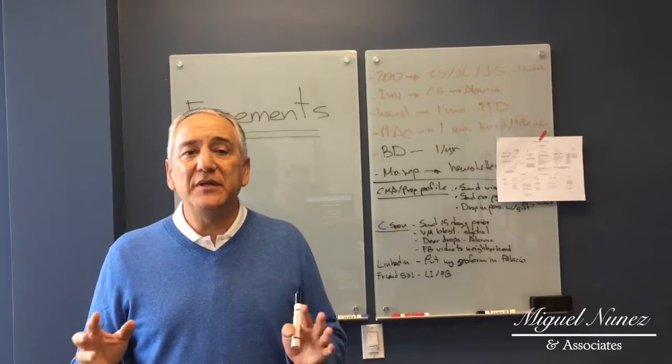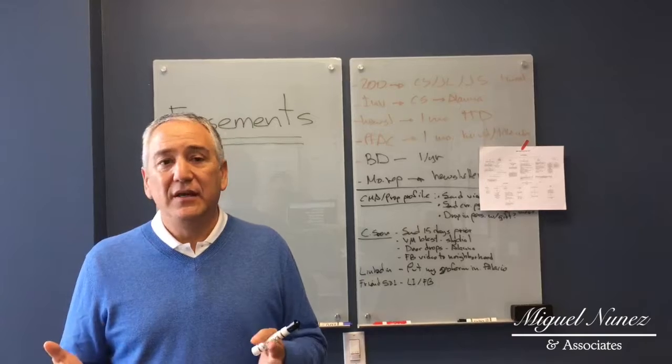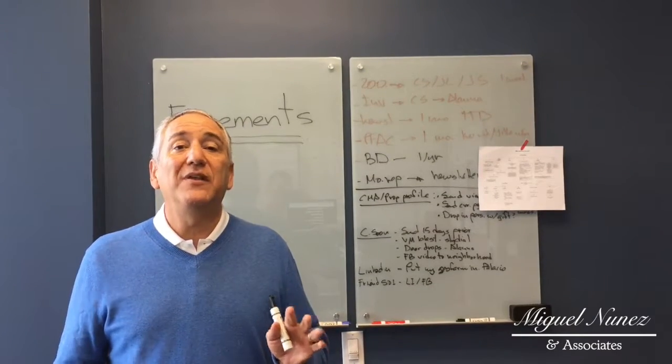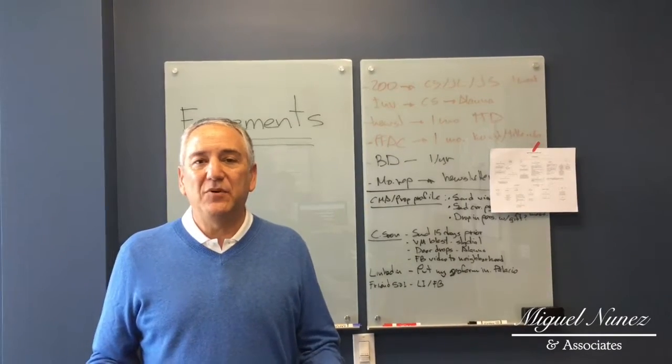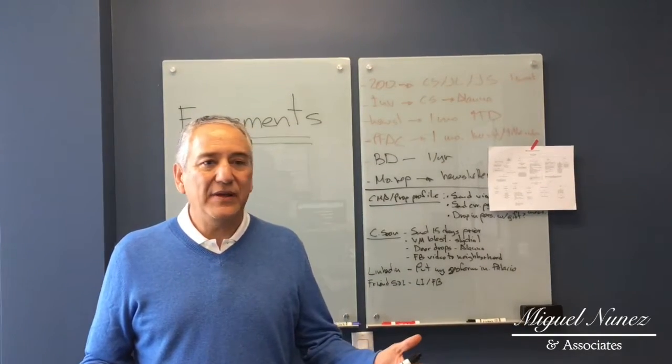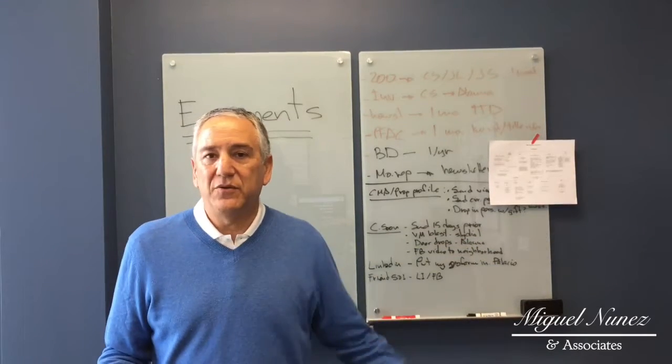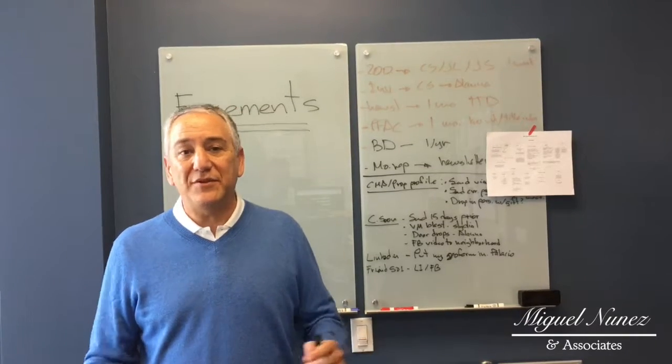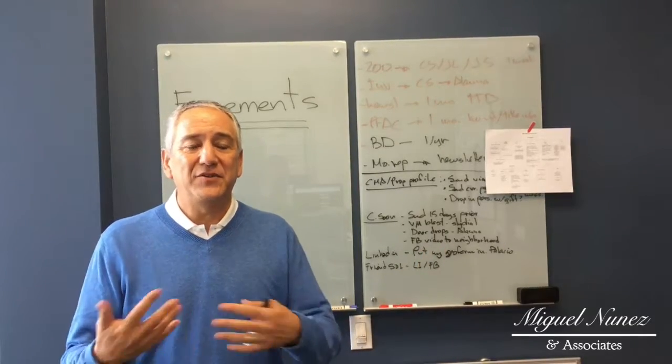Basically, an easement is a real estate ownership granted to an individual or an entity to make a limited but typically indefinite use of the land of another. Why indefinite? Because, for example, most likely you have a cable, your cable TV utility has the line running through your backyard to your house. Well, that's going to be there pretty much for all the lifetime that you own the house.